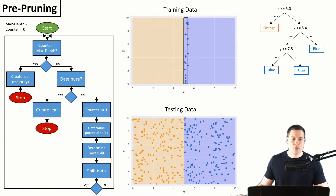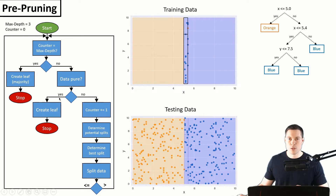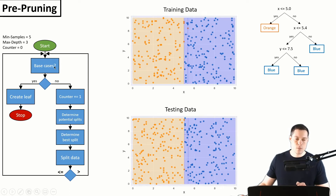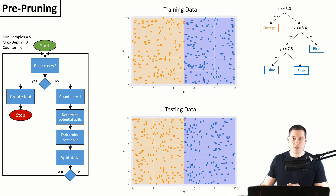Now we've seen two approaches for implementing pre-pruning. For completeness, let's incorporate all those base cases into the flowchart. We can rewrite it so that if one of those base cases applies — the data is pure, the max depth is reached, or the min samples threshold is not met — then we create a leaf. Otherwise, we split the data. That's the first type of pruning.